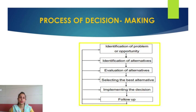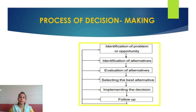The first step is the identification of the problem or opportunity. Decision making situations arise when we confront a problem or perceive an opportunity. When a difference occurs between the standard of performance and actual performance, it indicates the existence of a problem, and the manager needs to take decisions to solve it. The next step is to identify viable alternatives to solve the problem or capture the opportunity.